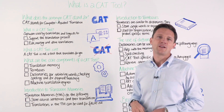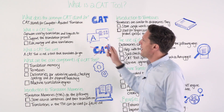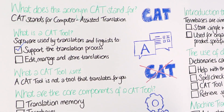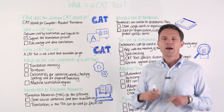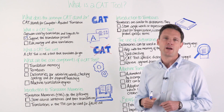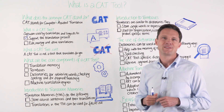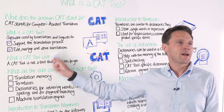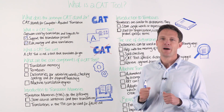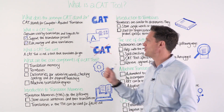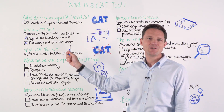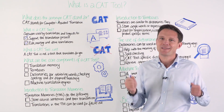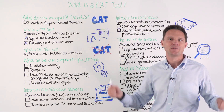What is a CAT tool? It's a software used by translators and linguists. It supports the translation process and allows you to edit, create, store, and manage a translation. Before we carry on, I think it's important to clarify what a CAT tool is NOT. A CAT tool is not something that is going to translate for you. It's not machine translation, so you still have to do your own translation. It will help you, but it doesn't do all the work.